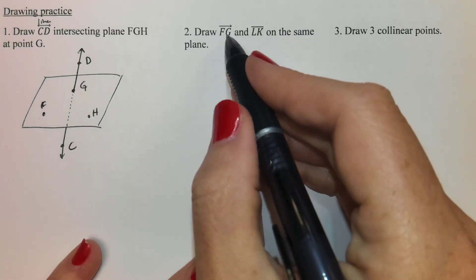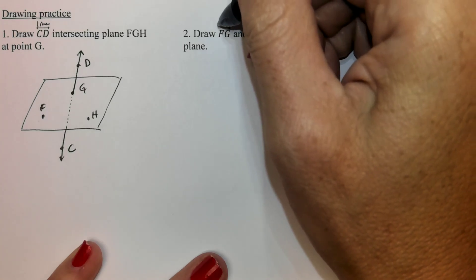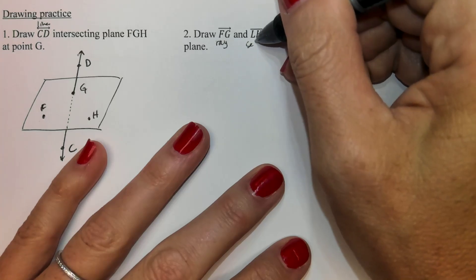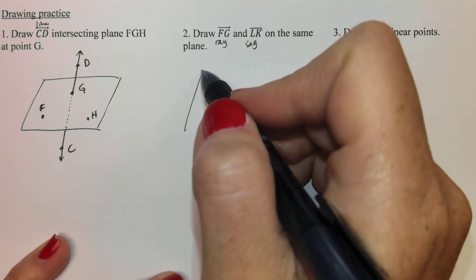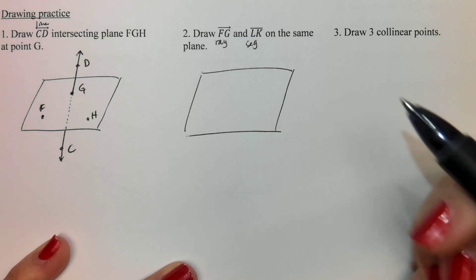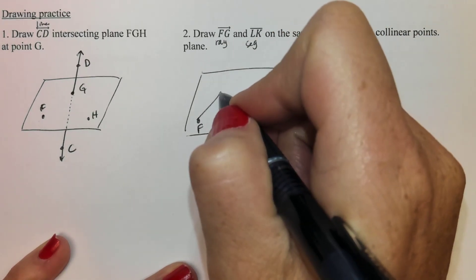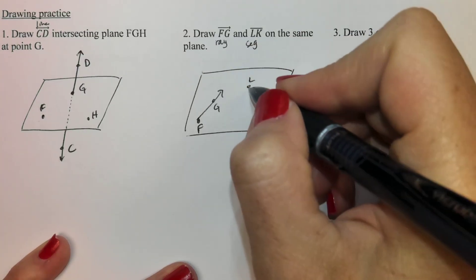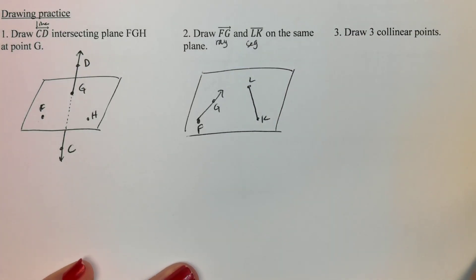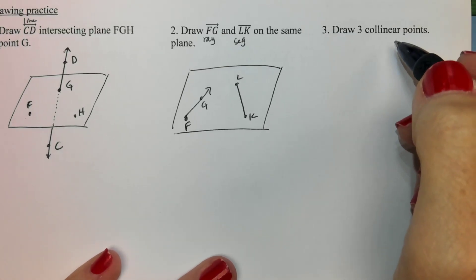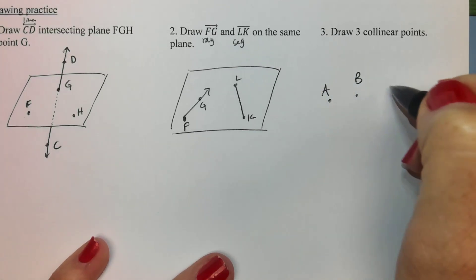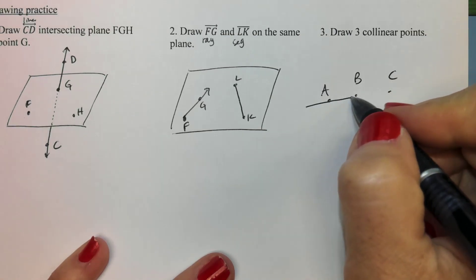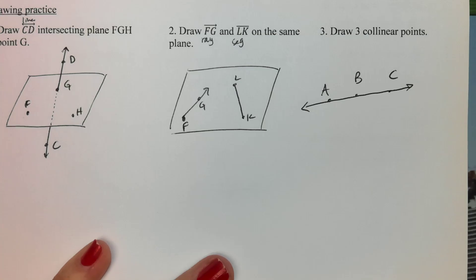Next: can you draw ray FG and segment LK on the same plane? FG is a ray — only one arrow. LK has no arrows, so that's a segment. So we need a plane, then draw ray F to G and segment L to K on it. Next, can you draw three collinear points? Just drawing A, B, C does not count. In order for them to be collinear, you have to draw a line connecting them all with arrows.